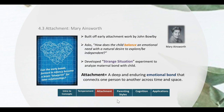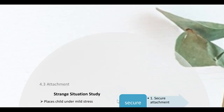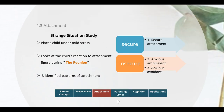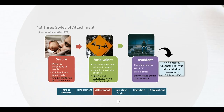The work of John Bowlby and Mary Ainsworth really helps us understand the importance of the quality of the emotional bond between the child and the caregiver — that's called attachment. The emotional bond can become a secure attachment style versus an insecure attachment style, with insecure attachment having two subtypes. Please become familiar with all of the characteristics of secure and insecure attachment.